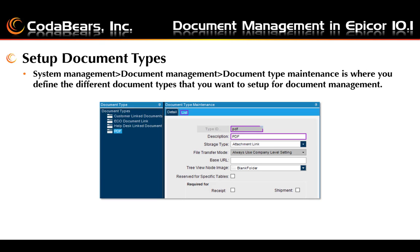Setting up document types is found under System Management, Document Management, and Document Type Maintenance. You need to define a type ID and a description. You can also use the Storage Type drop-down, which has the same three options as the company setup — file system, SharePoint location, or file attachment link. It also has a fourth option called Collaboration, which is specific for a SharePoint document.